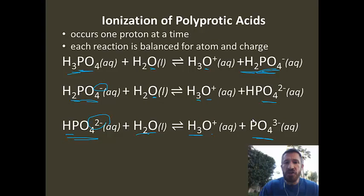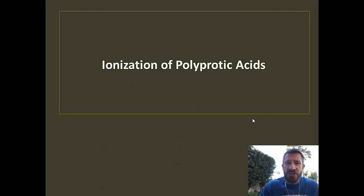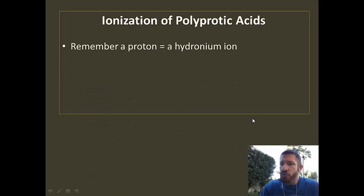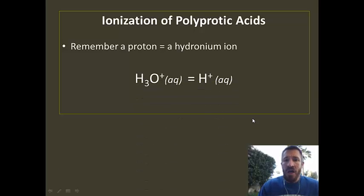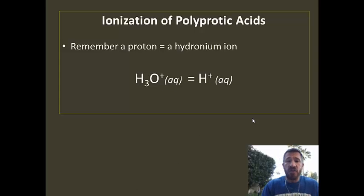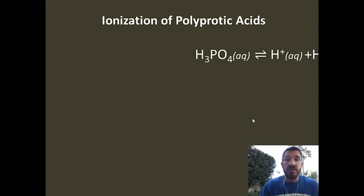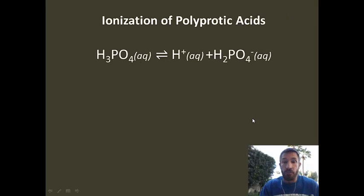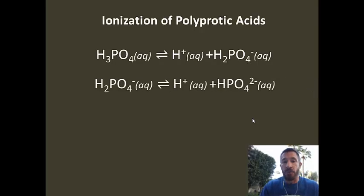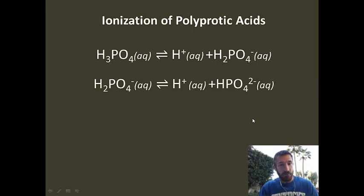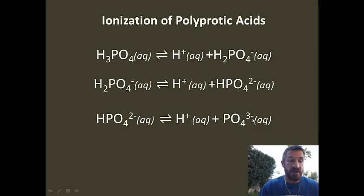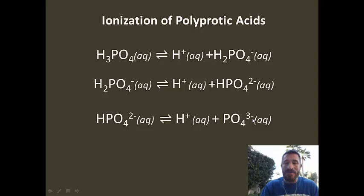Notice when doing these reactions: a proton is really the same as a hydronium ion. So H3O+ (hydronium) is equal to H+ (a proton). Thus, the reactions we just did could be written this way: phosphoric acid goes to a proton plus dihydrogen phosphate; dihydrogen phosphate goes to a proton and hydrogen phosphate; then hydrogen phosphate goes to a proton and a phosphate ion. Both are equivalent ways of writing the same ionization reaction.